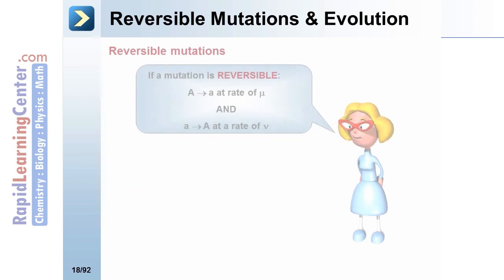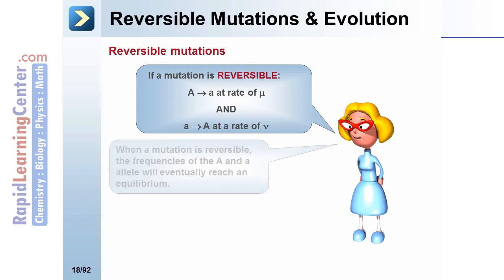If a mutation is reversible, then uppercase A goes to lowercase a at the rate of u, and the reverse happens at the rate of v. When a mutation is reversible, the frequencies of the uppercase A and lowercase a alleles will eventually reach an equilibrium.